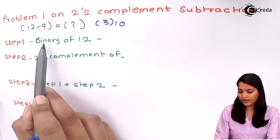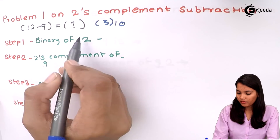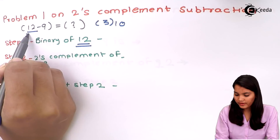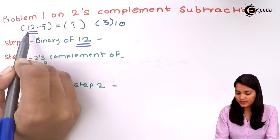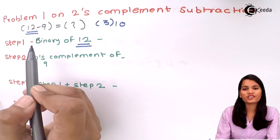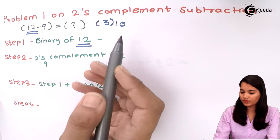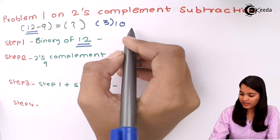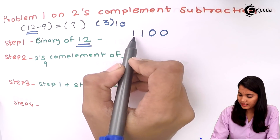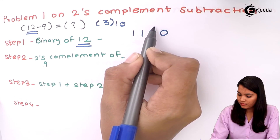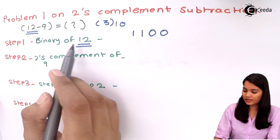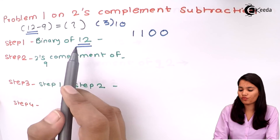The first step is to find out the binary of 12, because step one is always to find the binary of the first number. So our first number is 12. The binary of 12 is 1 1 0 0 — that is 8 plus 4 equals 12. Therefore this is the correct binary representation of 12.